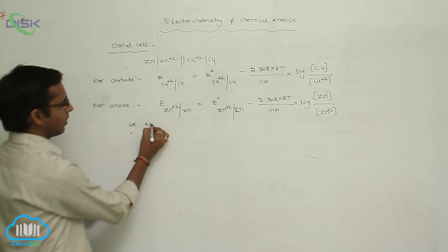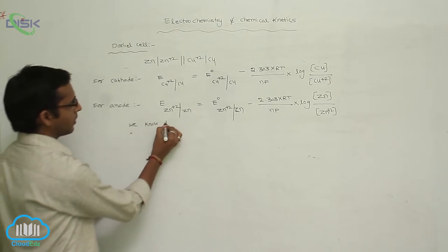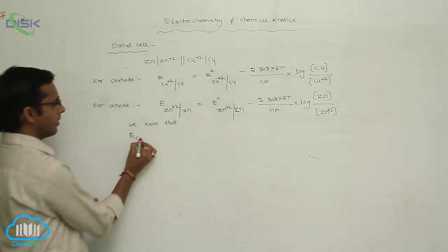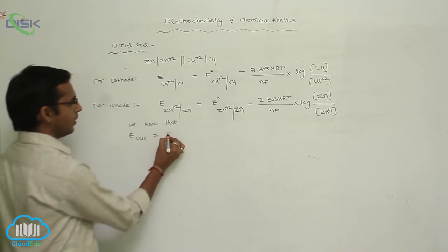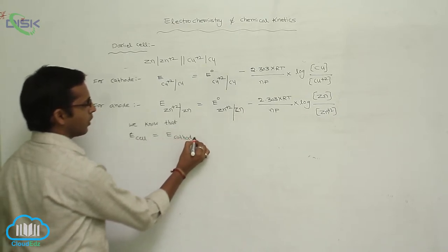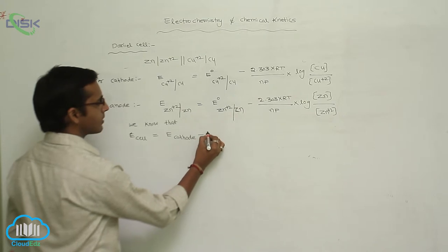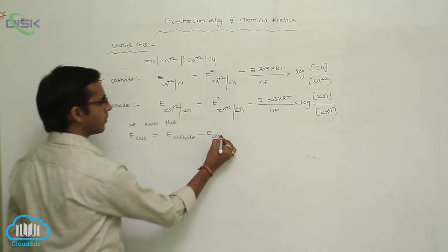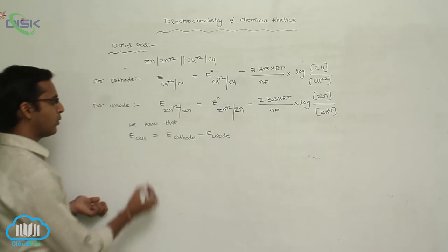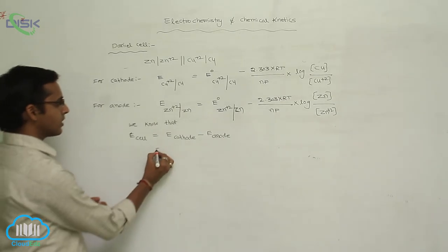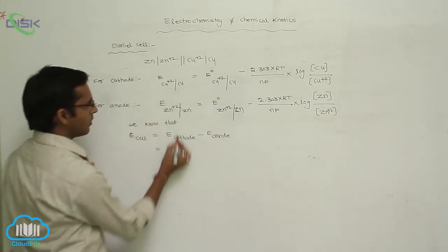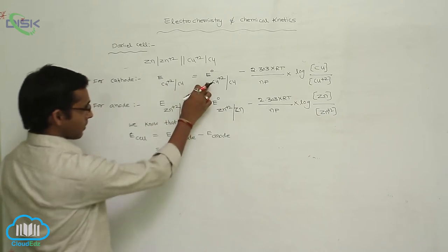We know that E_cell is equal to E_cathode minus E_anode. So now we substitute the Nernst equation expressions for E_cathode and E_anode.